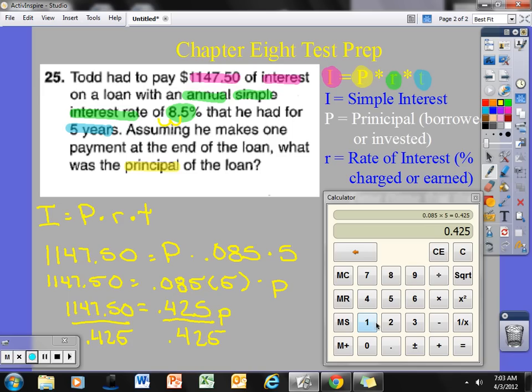So, I am going to take $1,147.50 divided by .425. And I know that the principal that I borrowed, so the P, is equal to, I ended up borrowing $2,700.